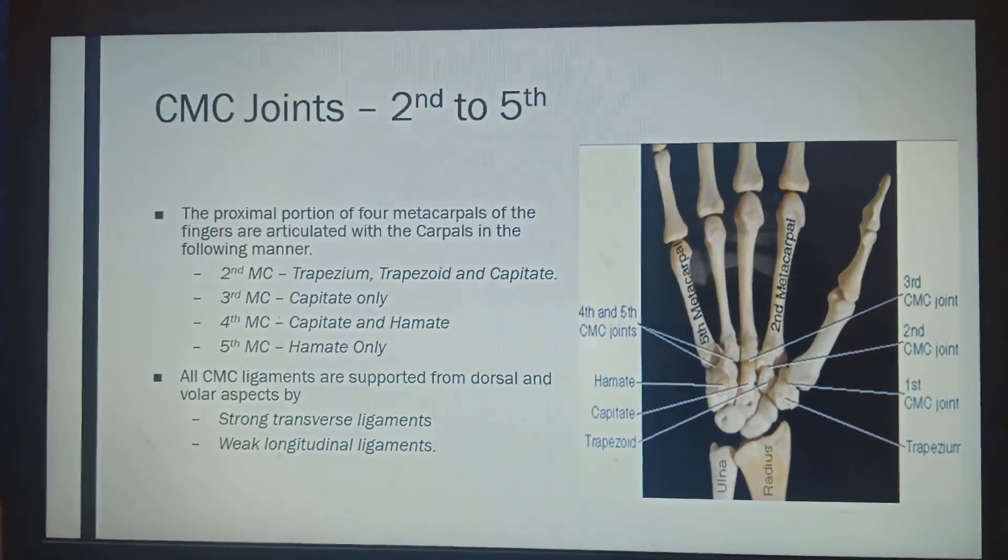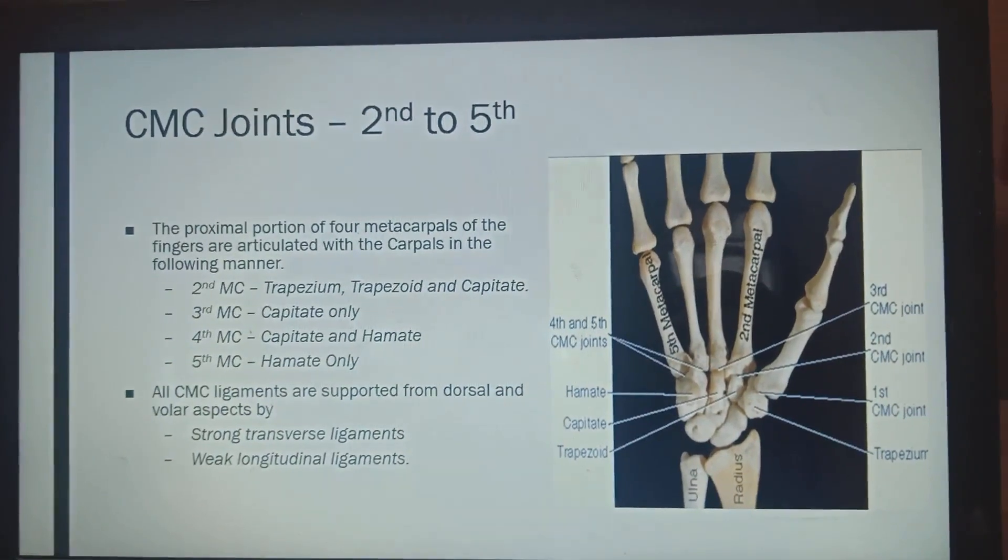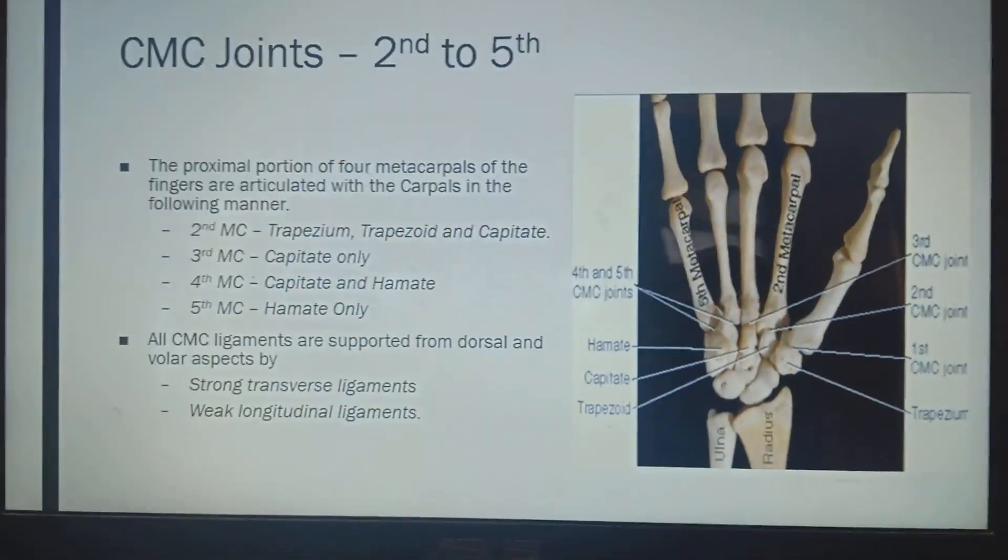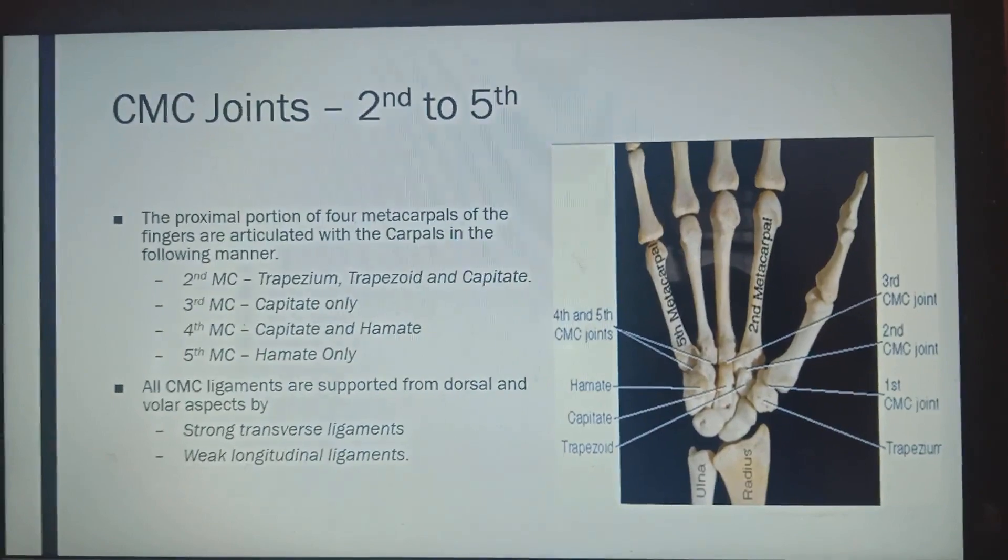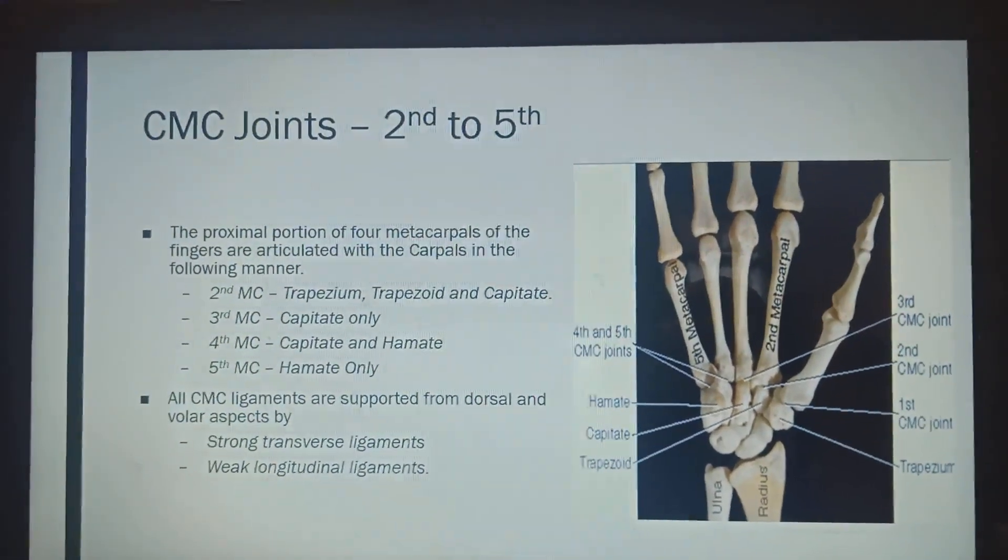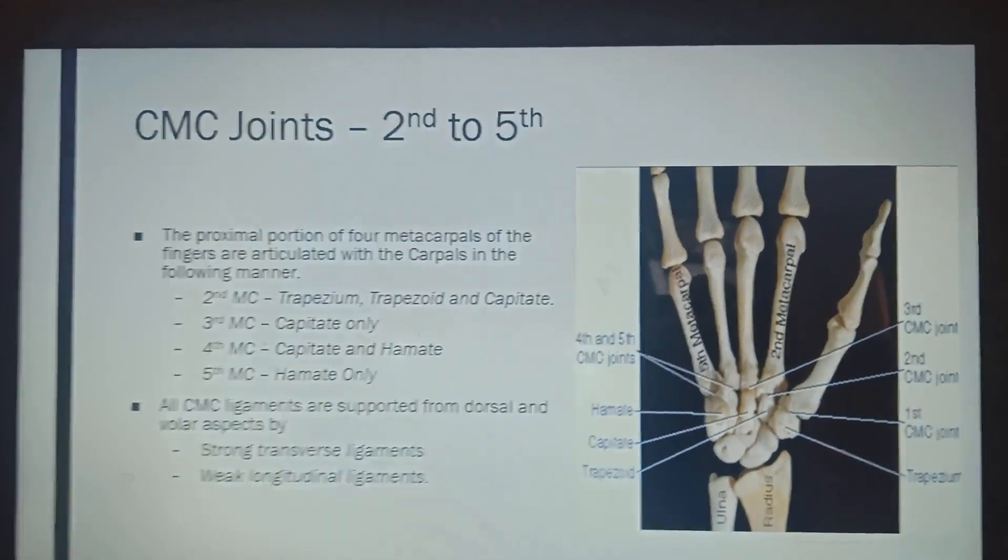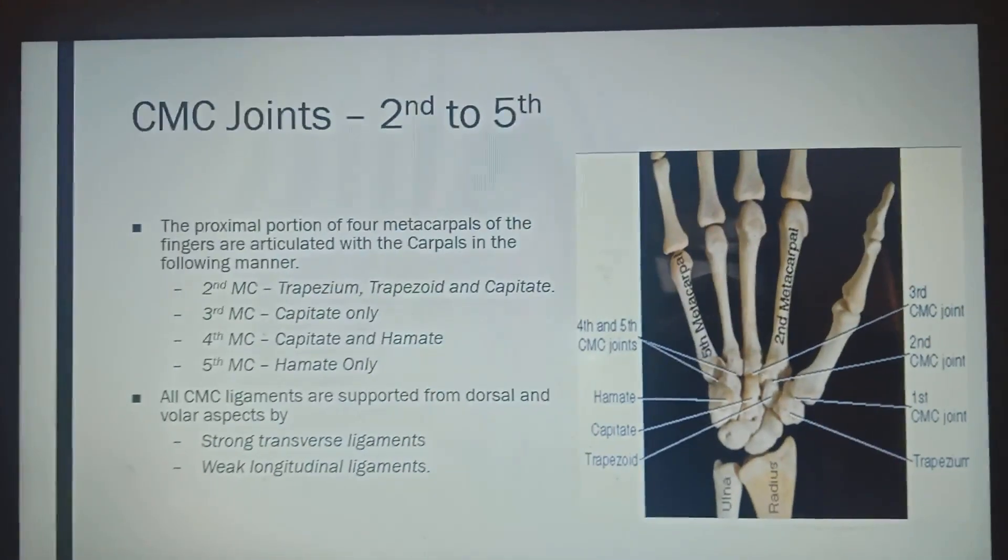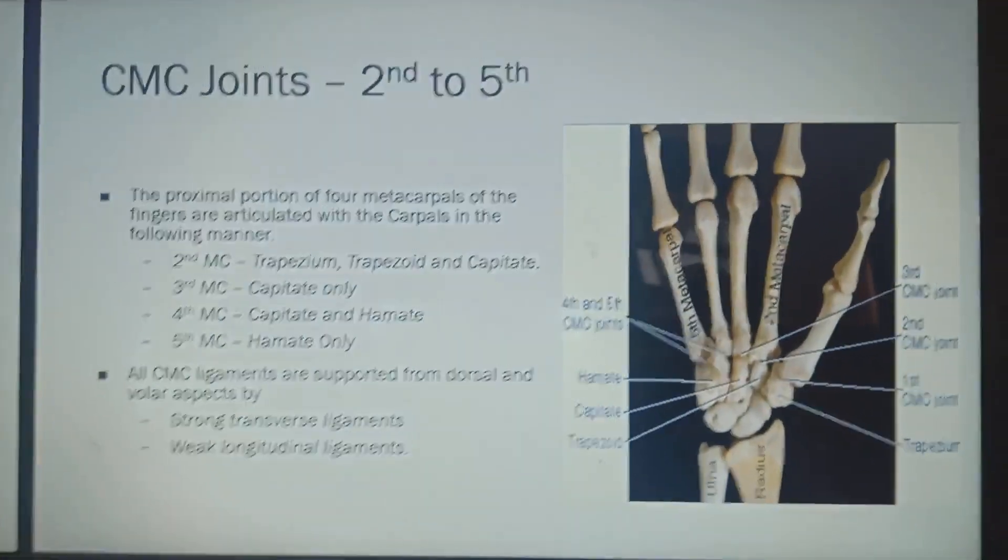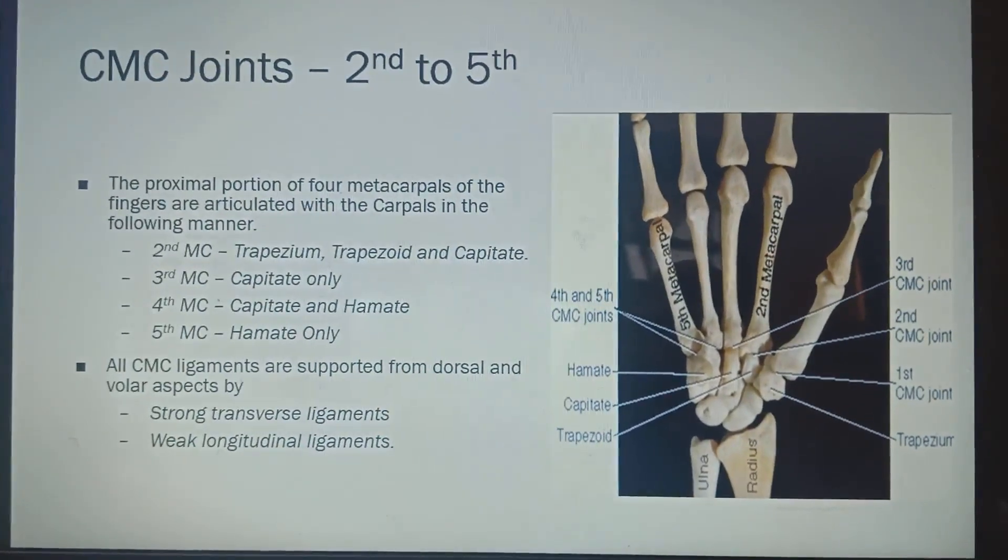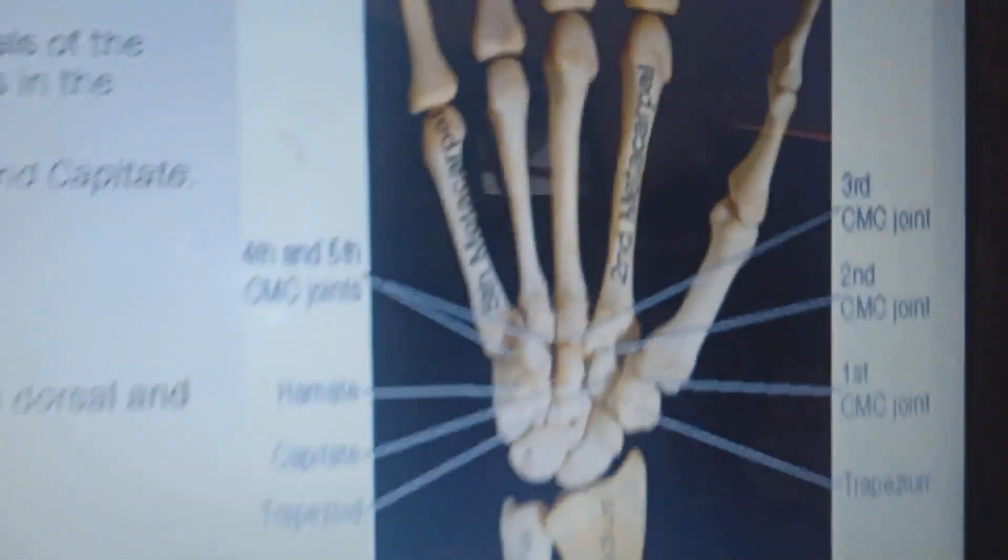Now, look at the CMC joints of 2nd to the 5th digits. This is very important joints and you can see their connection with the distal row of carpals. You can see the 2nd metacarpal joint is connected with 3 bones. That is your trapezium, trapezoid and capitate.